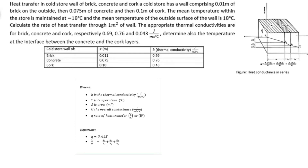Hi there and welcome back. Let us look at heat transfer by conduction. The example covers heat transfer in a cold store wall of brick, concrete and cork. A cold store has a wall comprising 0.01m of brick on the outside, then 0.075m of concrete and 0.1m of cork. The mean temperature within the store is maintained at negative 18°C and the mean temperature of the outside surface of the wall is 18 degrees Celsius.